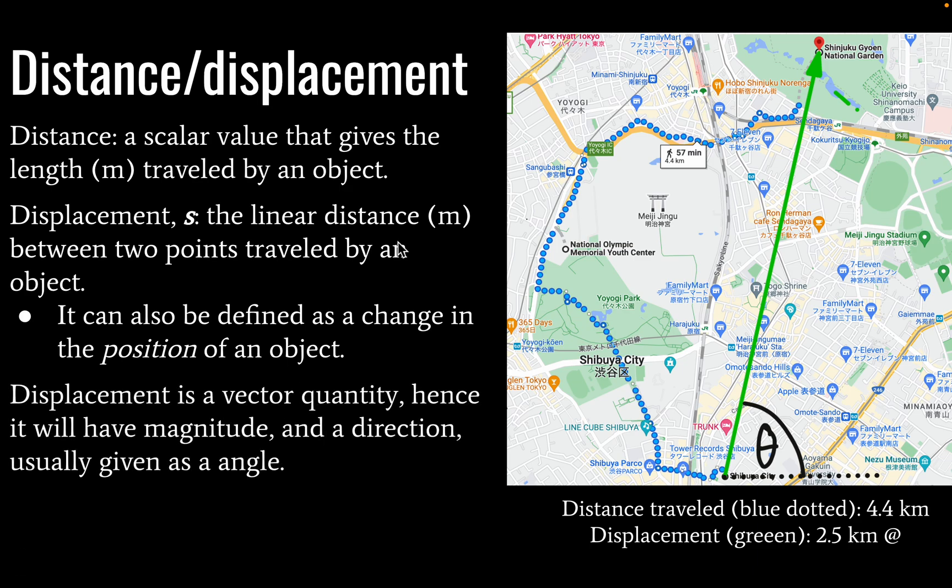Okay, so displacement is what we call vector. And as such, it will have magnitude and direction, and in IB physics, we'll usually give that as an angle, although you may also see what are called bearings in the new syllabus. I will have a video for vectors and scalars for a full breakdown, and I will put up a little card in the corner here so you can check out that video as well.